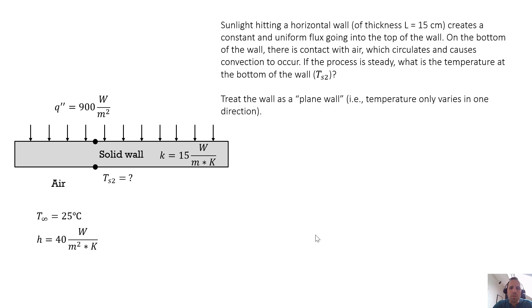On the bottom of the wall there is contact with air which circulates and causes convection to occur. If the process is steady, what is the temperature at the bottom of the wall, also denoted as TS2?